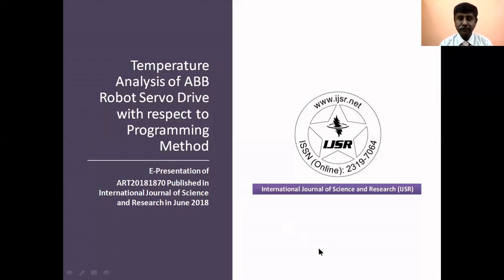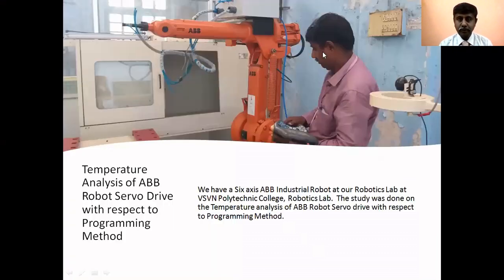This is our robotics lab. We have at VSV and Botany College an ABB robot. It is a six axis robot and it has a reach, that is a maximum distance it can move, as 1.44 meters. It can lift a payload of 5 kg maximum. It's a small size robot and the problem of my study is based on this robot.